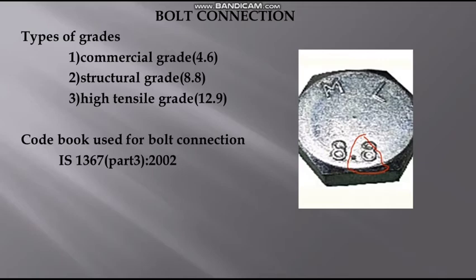Now let's talk about the grades and the codebook. The bolt connections are of three types: Commercial, Structural, and High Tensile. We will talk about grade values 4.6, 8.8, and 12.9.